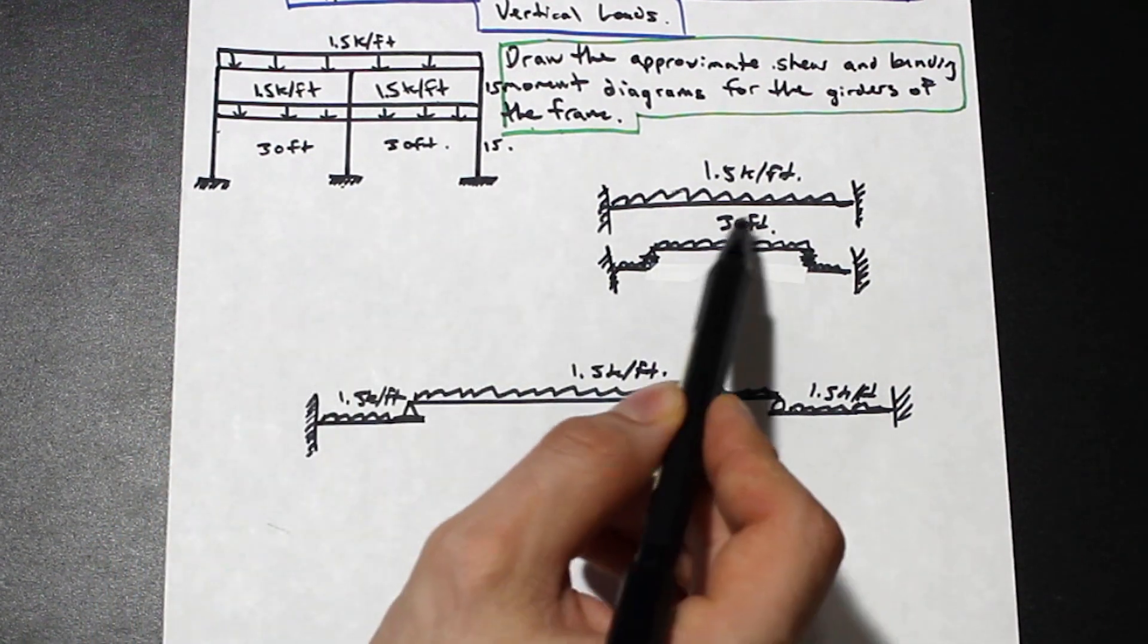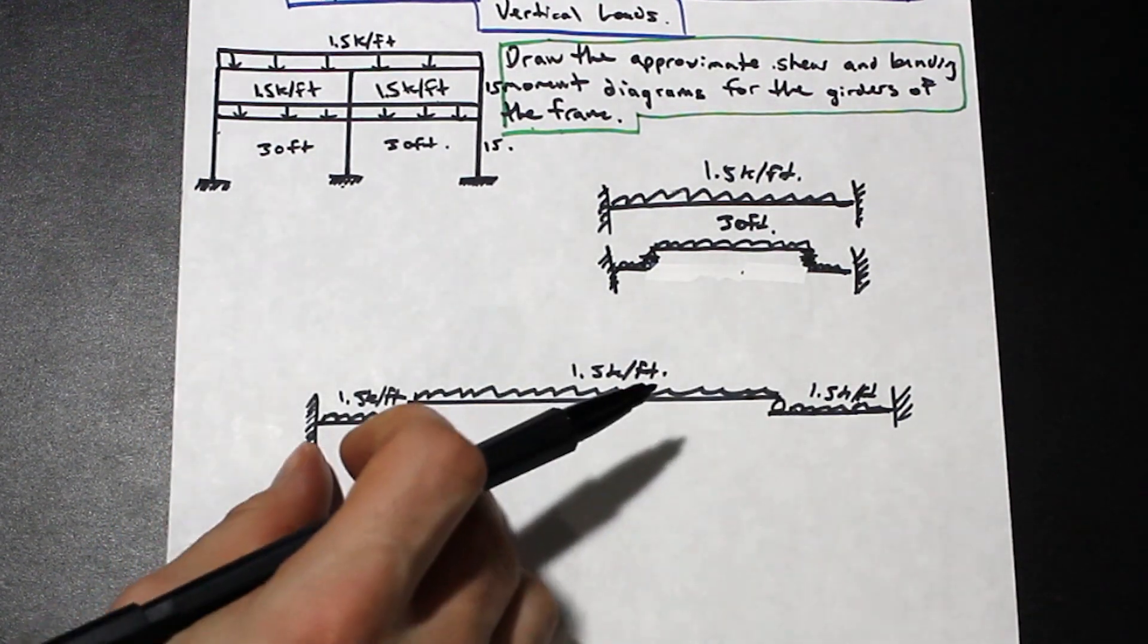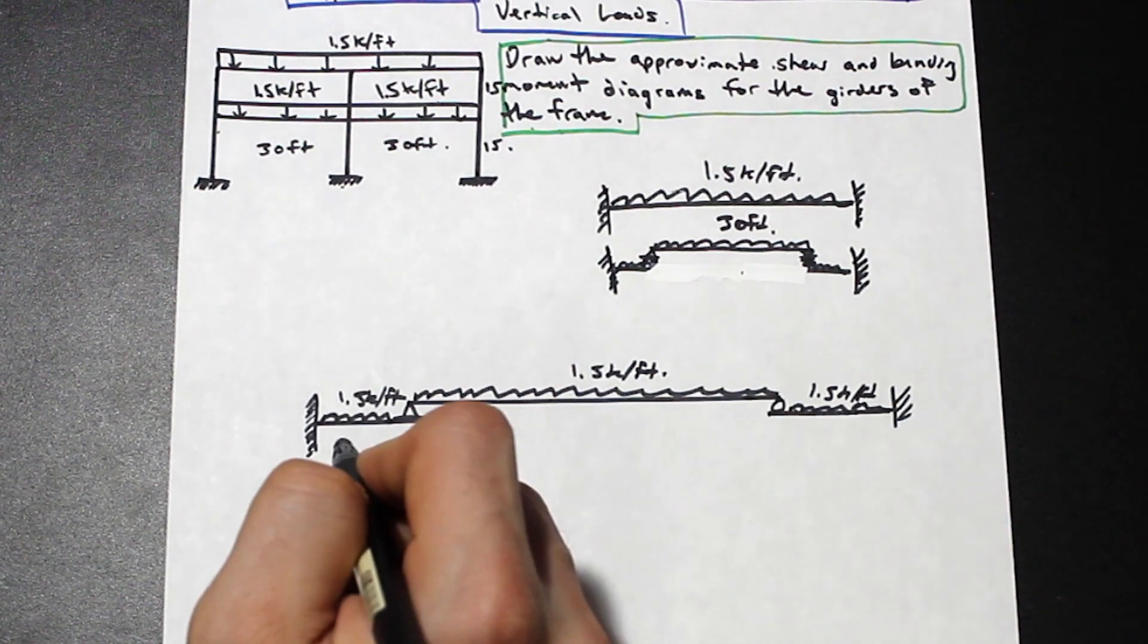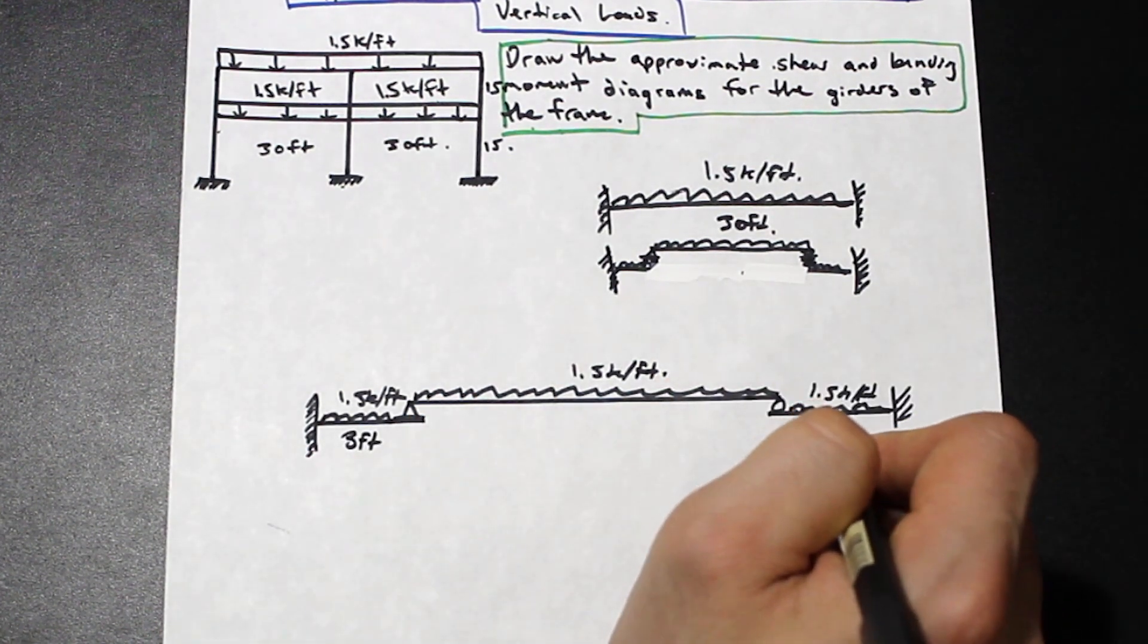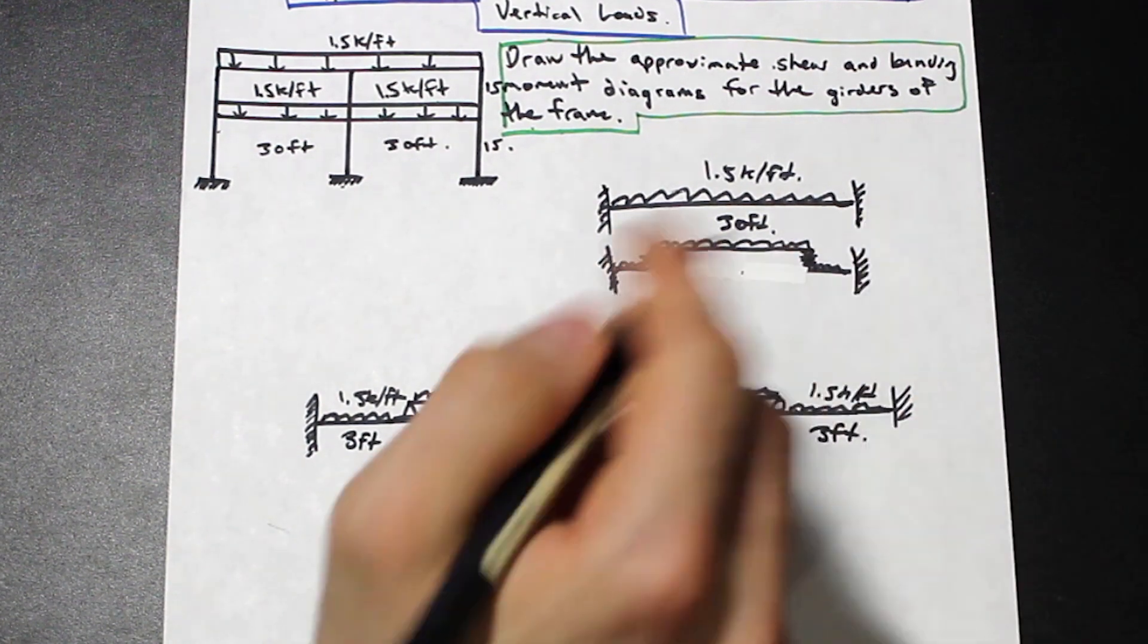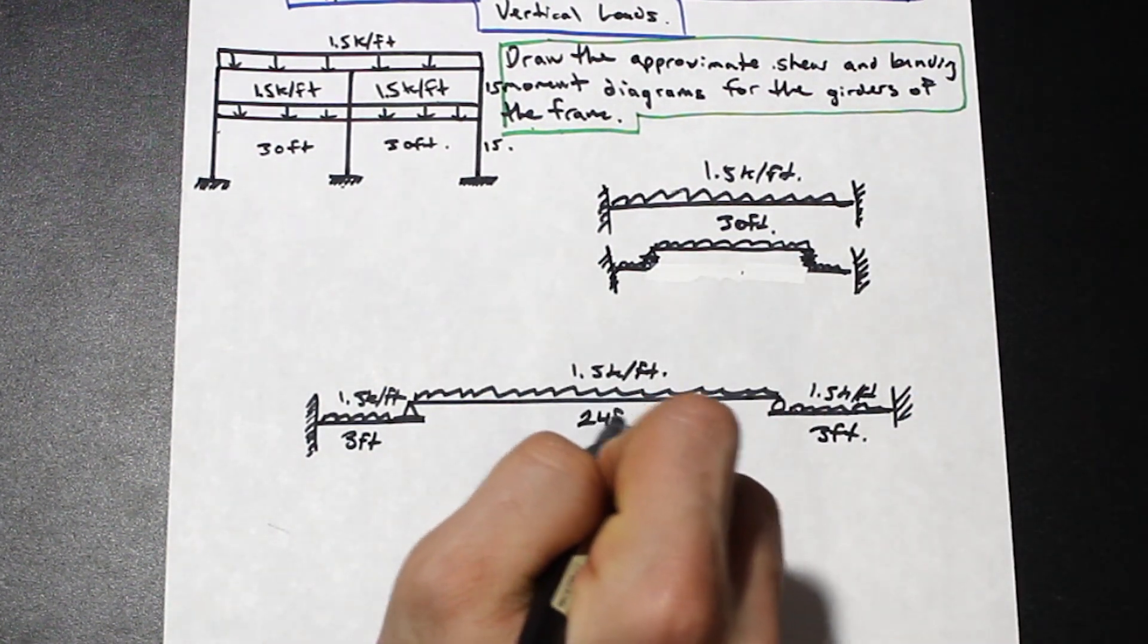So if we take a look, L here is 30. So 0.1L is going to be three feet. So we're going to have three feet on each side. So this is three feet. This is three feet. And this is 24 feet.